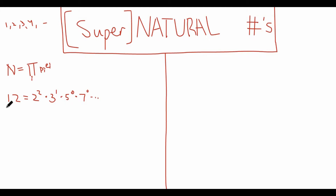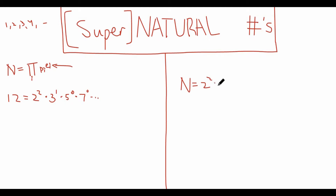Most of us should know what a natural number is, but most of you probably haven't heard of what a supernatural number is. I know I hadn't before recently. A supernatural number is simply an extension to a natural number. This extension allows e_i to not only be a finite number, but e_i can also be infinite. For example, a supernatural number might be equal to 2 to the power of 2, times 3 to the power of 5, times 5 to the power of infinity, times 7 to the power of infinity, times 11 to the power of 0, and so on.